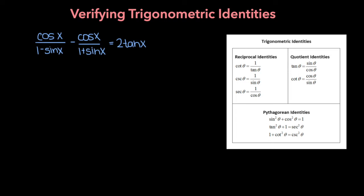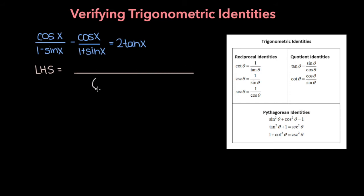The strategy you're going to want to employ in solving these problems is pick one side of the equation and use the fundamental trig identities in this chart to convert it to the other, thus showing that the two sides are equal. For this problem, let's focus in on the left-hand side and start simplifying by taking the common denominator of these two fractions, which would be 1 minus sine x times 1 plus sine x.